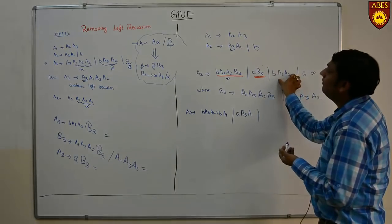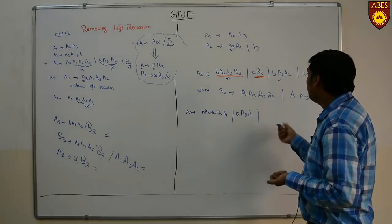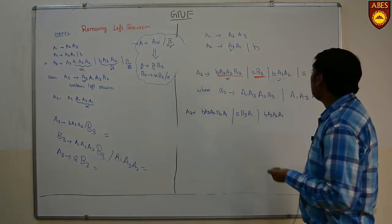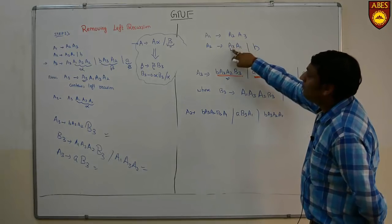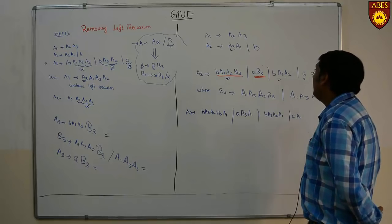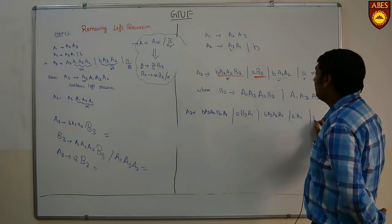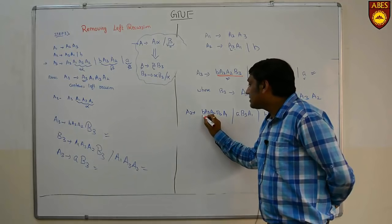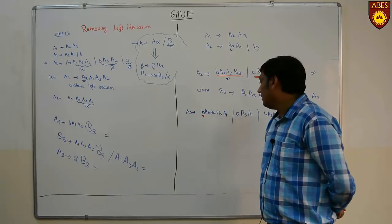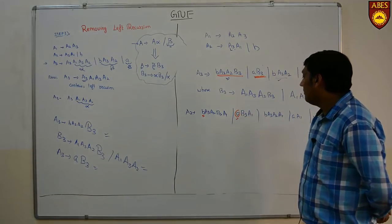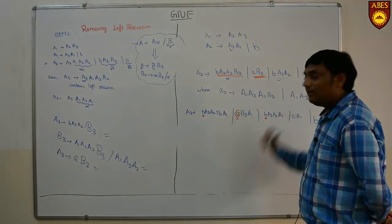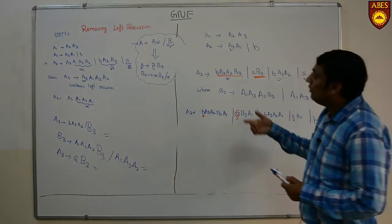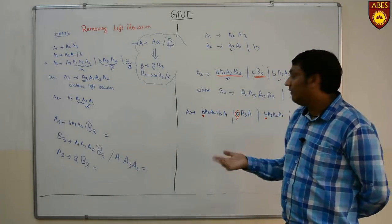And substituting the value of A in place of A3 we get A A1 slash B. Looking at equation A2, the first term is a terminal followed by variables, this is also a terminal followed by variables, this is a terminal followed by three variables, and this is a terminal itself. So A2 has been converted into GNF.